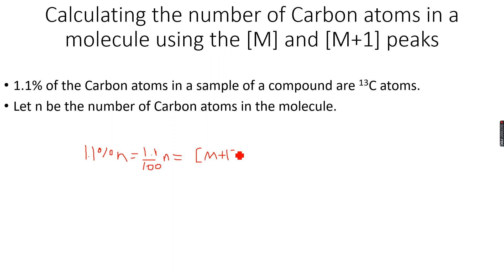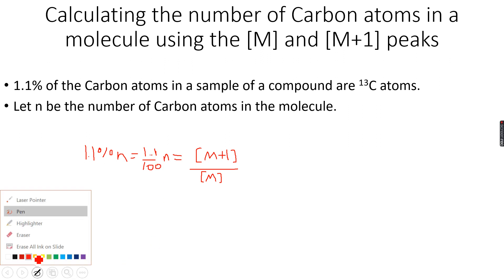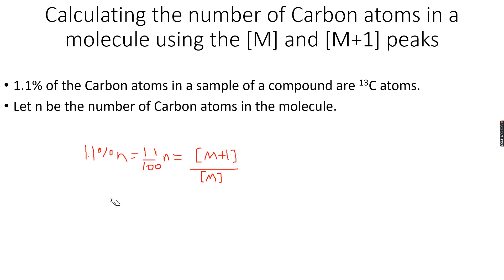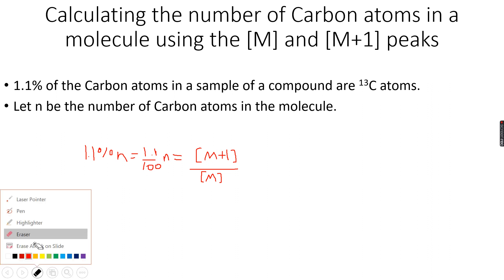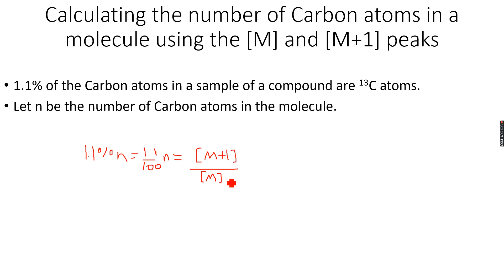This expression equals the ratio of the relative abundance of the M+1 peak to the M peak. Here, 1.1 represents the M+1 and 100 represents the M, so 1.1 over 100 times n gives this ratio. In practice, it's difficult to read this value directly from a graph in the paper, so the values will be given to you — they'll provide the ratio of the relative abundances. For example, let's say the ratio of M+1 to M is given.